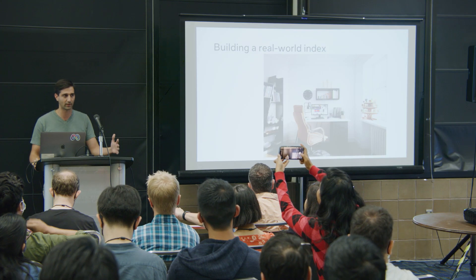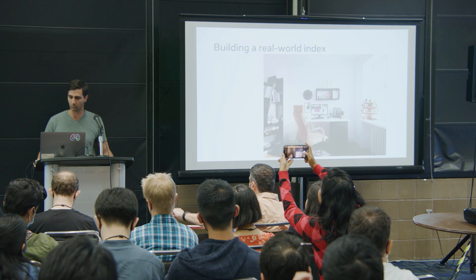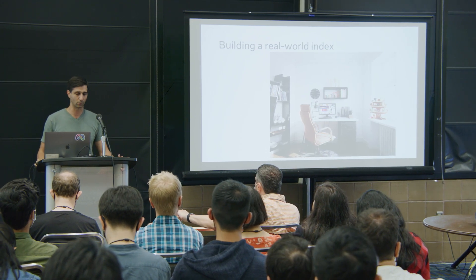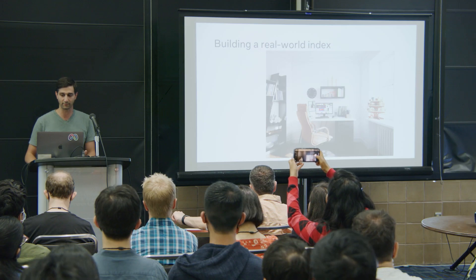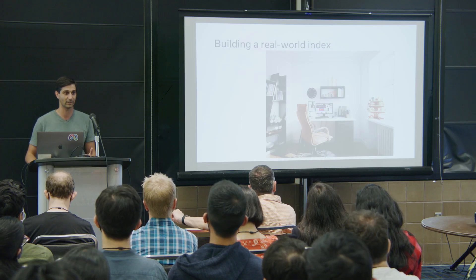Today I'm going to talk about egocentric scene understanding, but really we form this internally as a problem that we call indexing. Let me define what that actually is a bit more clearly and what it means to build a real-world object index. One of the key aspects of egocentric machine perception is that the user is embodied in their environment, so we capture all of their interactions with the environment through all of our different sensors.